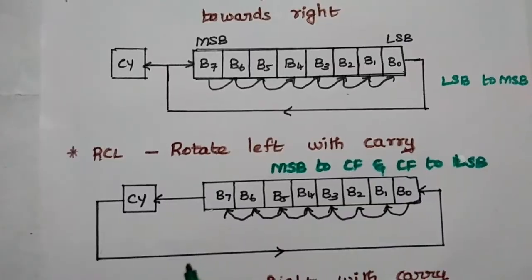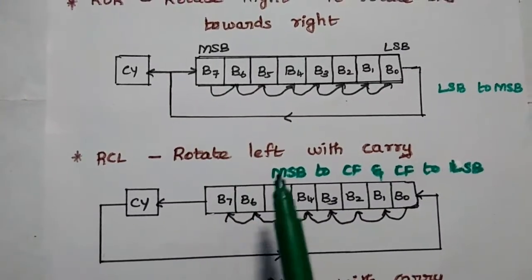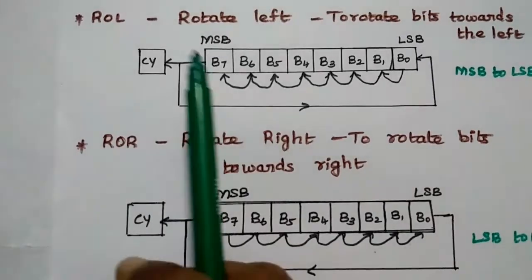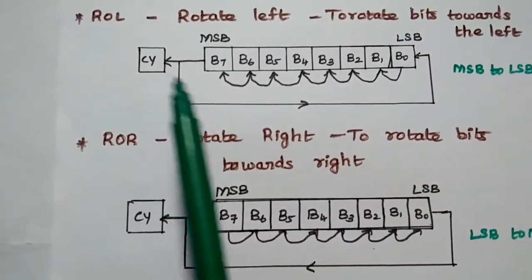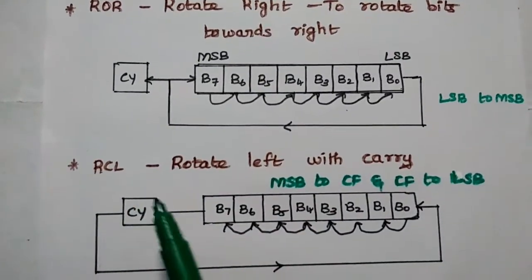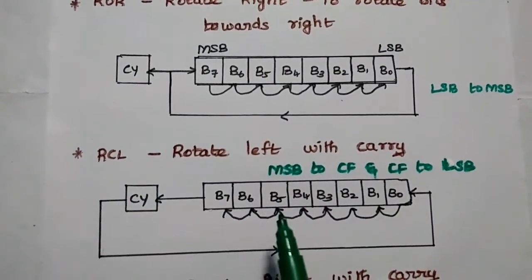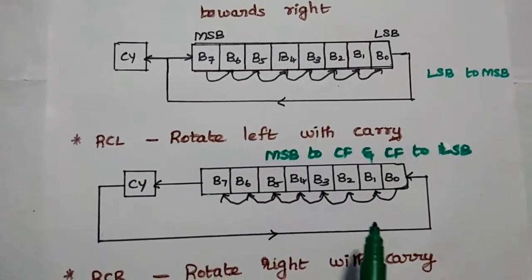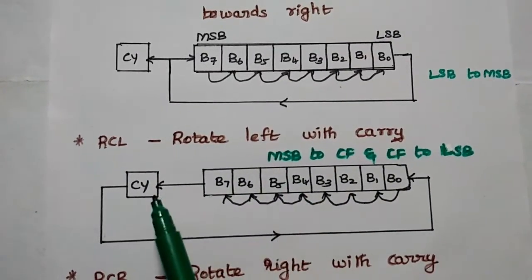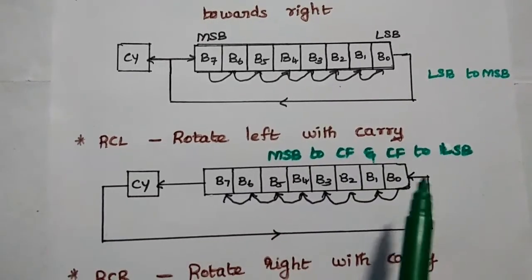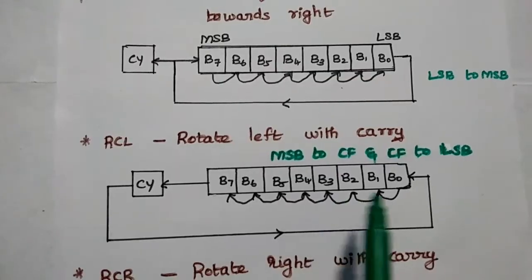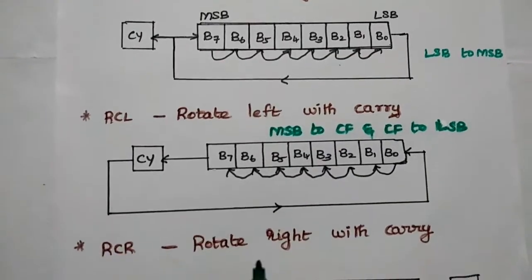Next is RCL — Rotate Left with Carry. In the previous rotation operations, the carry flag was not involved. But in RCL, we consider the carry flag as well. Here we rotate along with the carry flag: MSB goes to carry flag, carry flag goes to LSB, and then B0 to B1, B1 to B2 towards the left.